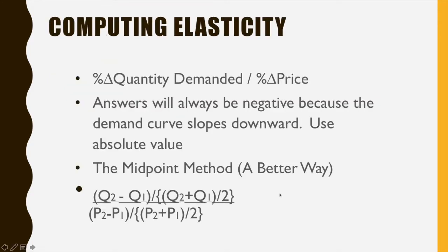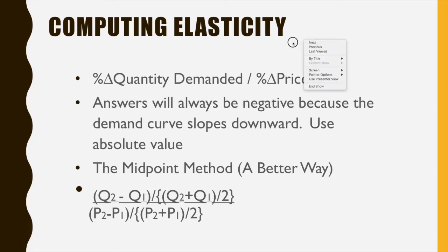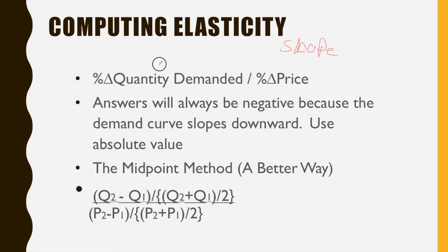The way we calculate elasticity is by finding the slope of the line. The formula is the percent change in quantity demanded divided by the percent change in price. In algebra, slope is rise over run, but here it's run over rise, because we flipped price and quantity demanded — putting the independent variable on the y-axis and the dependent on the x-axis.